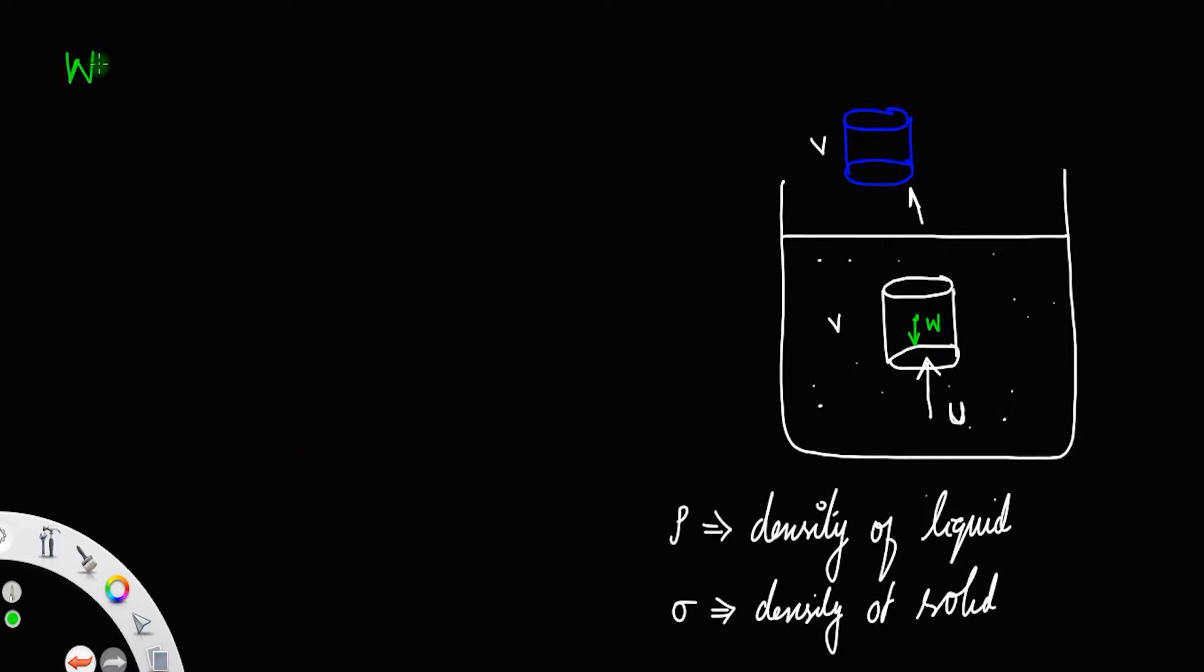W is the weight of the body, and U is the upthrust or the buoyant force.